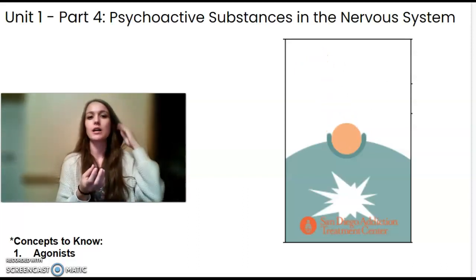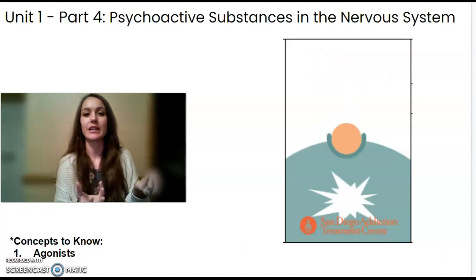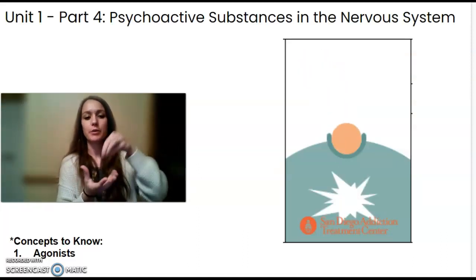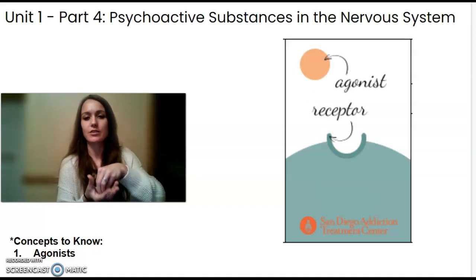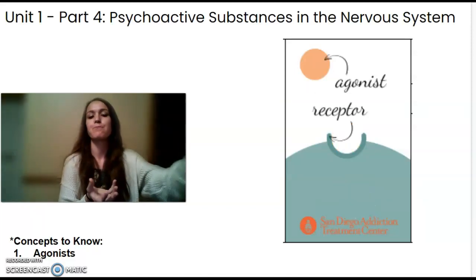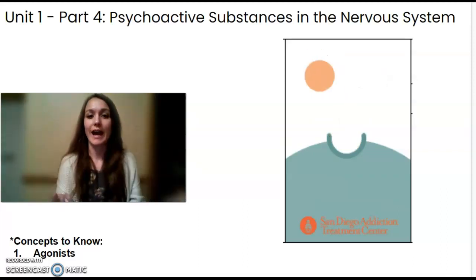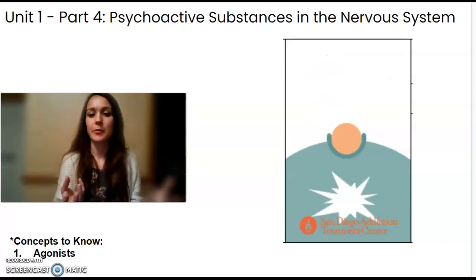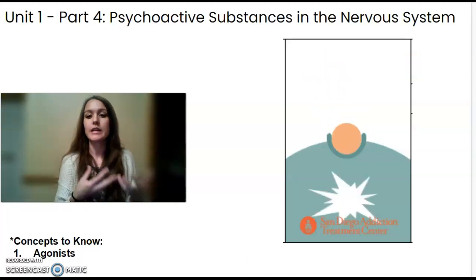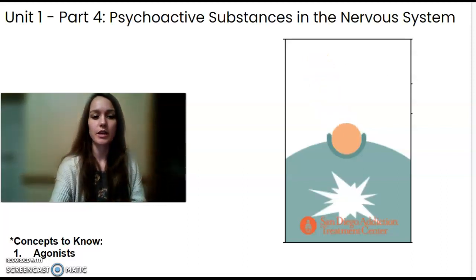If you remember from the previous video, receptor sites are actually shaped a lot like a keyhole with a key. Specific neurotransmitters will fit perfectly into their receptor site — they won't fit into other receptor sites. So a dopamine neurotransmitter is going to fit into a dopamine receptor site. An agonist is a substance that's chemically similar to a neurotransmitter and designed to act like a specific neurotransmitter.